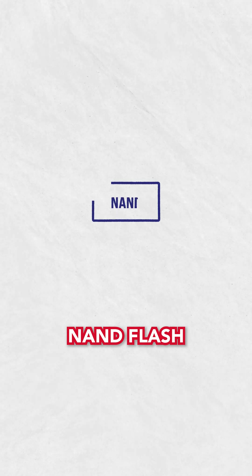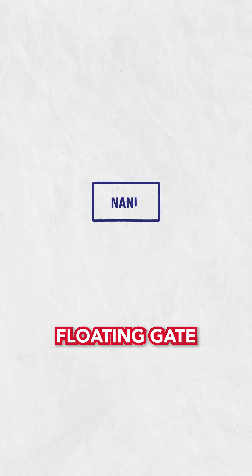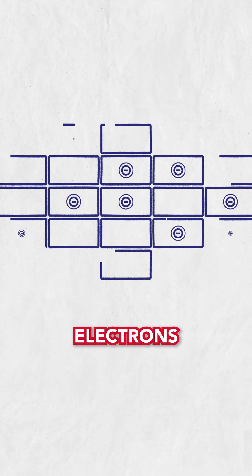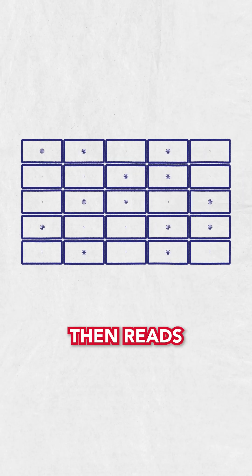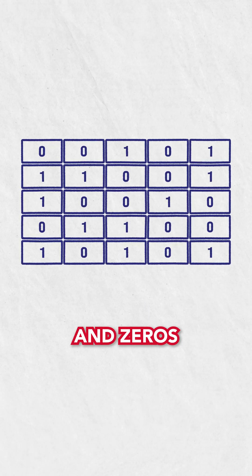They have a pool of NAND flash, which are floating gate transistors storing electrons, which then reads as ones and zeros.